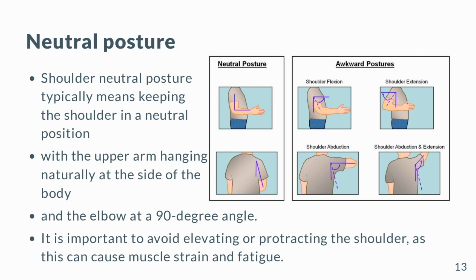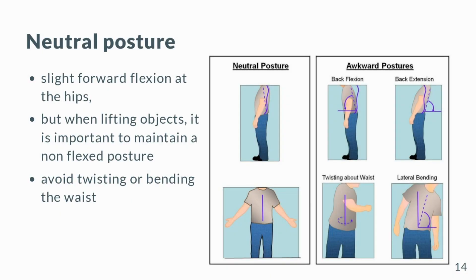Shoulder neutral posture typically means keeping the shoulder in a neutral position, with the upper arm hanging naturally at the side of the body and the elbow at a 90-degree angle. It is important to avoid elevating or protracting the shoulder, as this can cause muscle strain and fatigue. The neutral posture of the back technically involves a slight forward flexion at the hips. But when lifting objects, it is important to maintain a non-flexed posture to avoid placing unwanted forces on the spine. When lifting or performing other physical tasks, it is important to avoid twisting or bending the waist, as this can place excessive strain on the muscles and other tissues in the lower back.